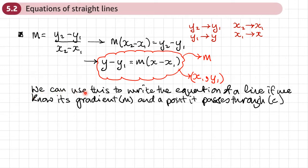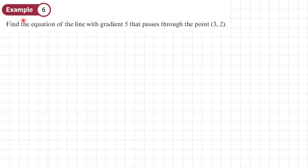We can use this to find the equation of a line if we know its gradient m and a point it passes through — that point being x1, y1. Example 6: find the equation of a line with gradient 5 that passes through the point (3, 2).